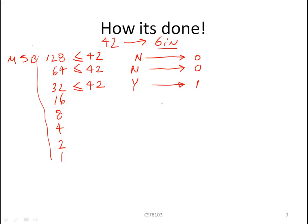Because the response was yes, we subtract 32 from 42 and carry that result to the next line. 32 from 42 is 10. We continue our comparison: is 16 smaller than or equal to 10? The answer is no. Therefore, for that bit position, we have a bit value of 0.